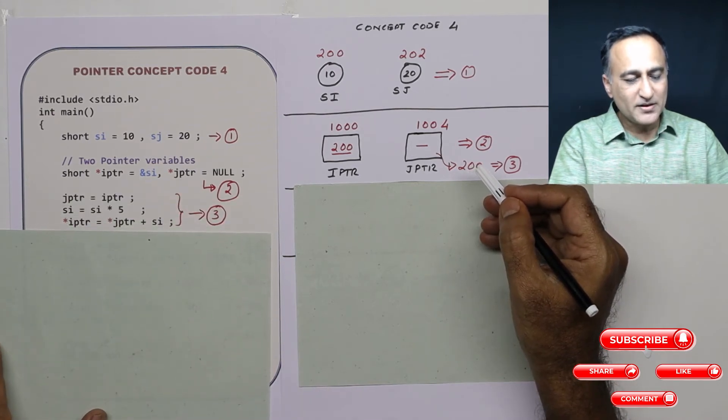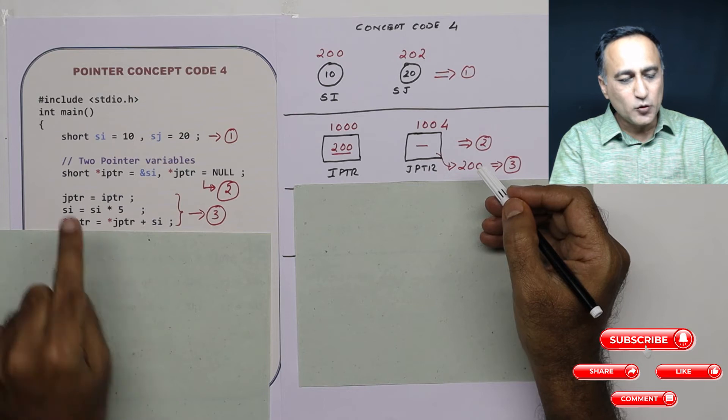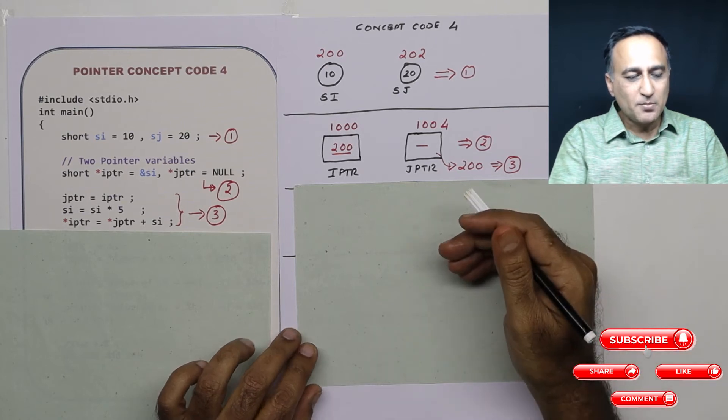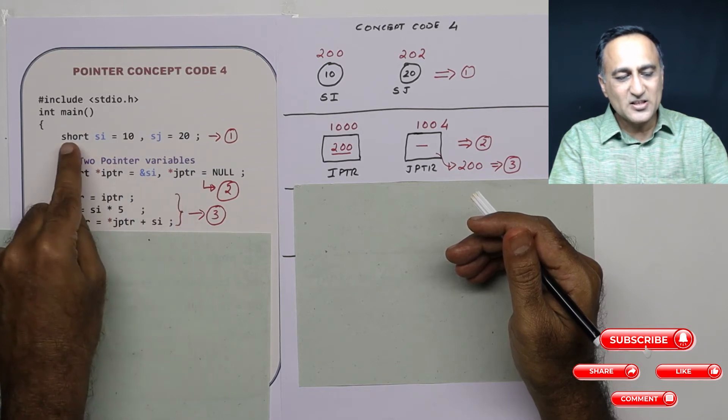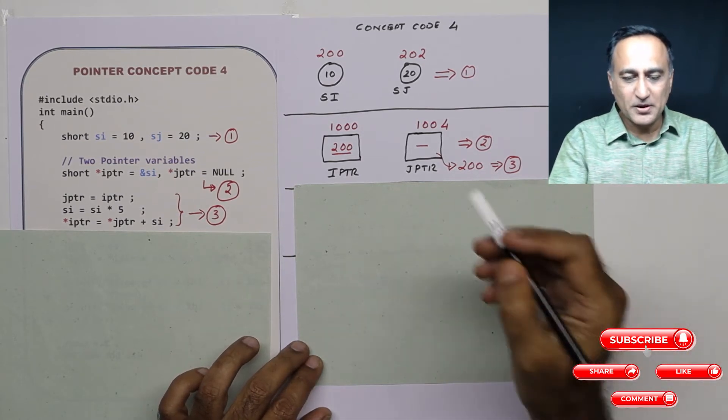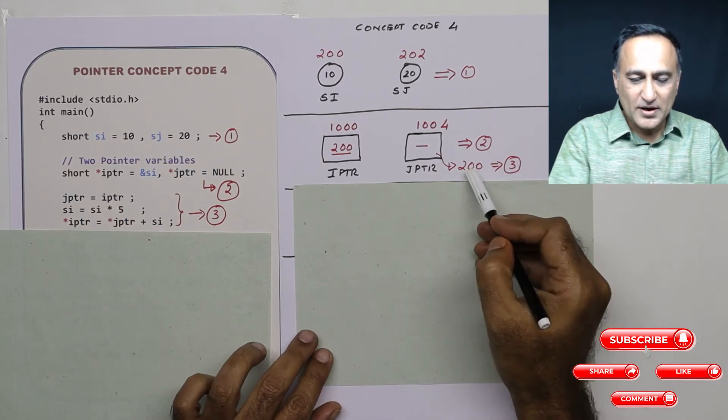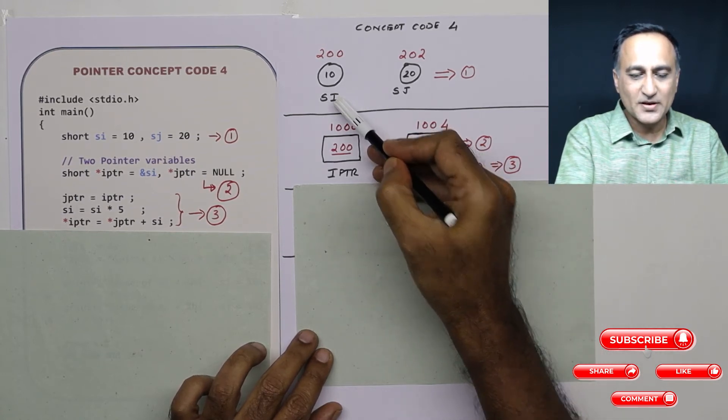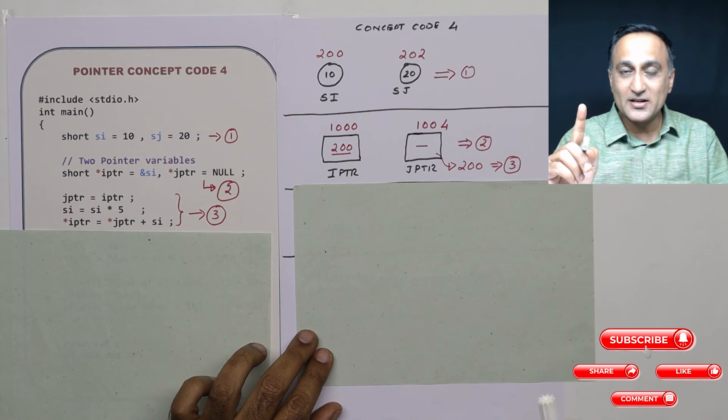Now let's come to step number three. What I am doing is I am copying whatever is the address IPTR into JPTR. Why am I able to copy the address from IPTR into JPTR? Because both are pointer variables of the same type both can contain the addresses of short integer variables. So the address contained in IPTR can be copied to JPTR. That's why now the content of JPTR is 200 because that is the address of SI. So IPTR contains the address of SI. JPTR also refers or points to the address of SI.